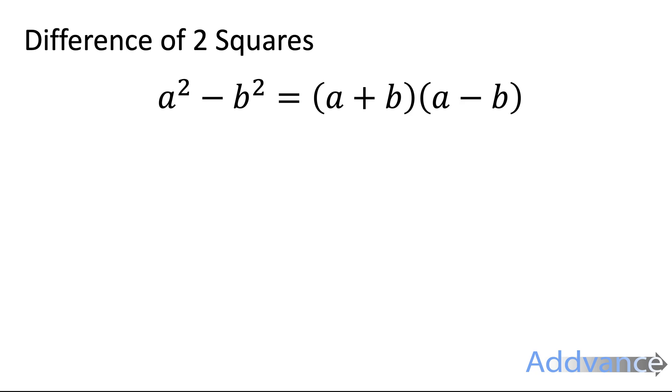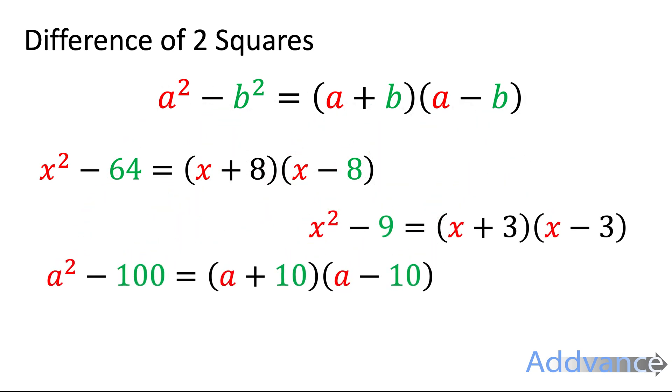And there are different forms of this. So it doesn't always have to be a's and b's. It could be x squared minus 64, that's 64 is 8 squared. It could be x squared minus 9 which is 3 squared. a squared minus 100 will be (a + 10)(a - 10) because a squared is a squared and 10 squared is 100. And of course we can use different letters as well. b squared minus z squared is (b + z) times (b - z).